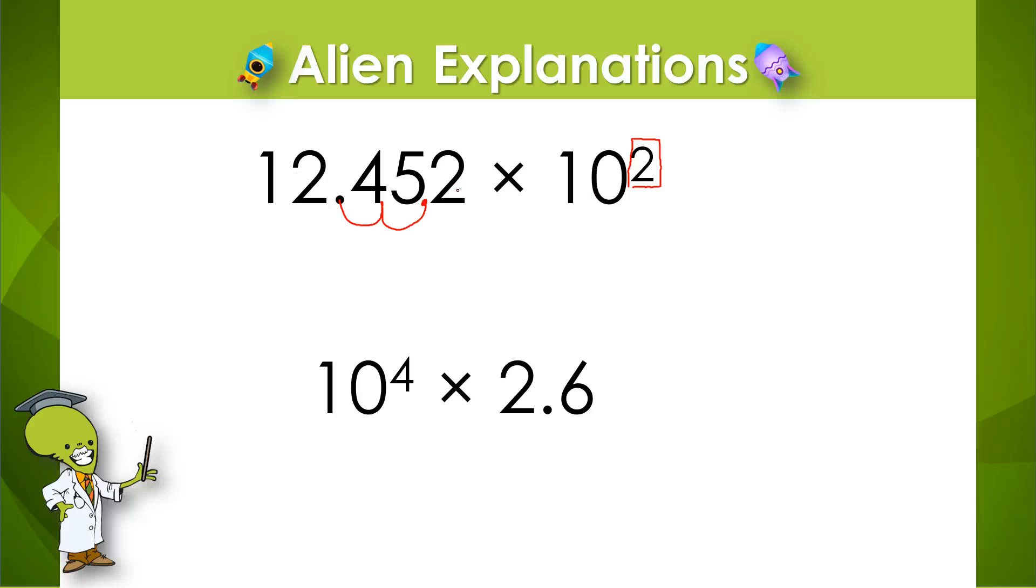So 12 and 452 thousandths is now 1,245 and 2 tenths. And the next example, the value of each digit is going to be moved up four place value positions because it is being multiplied by 10 four different times. So we just simply need to move our decimal point back four places.